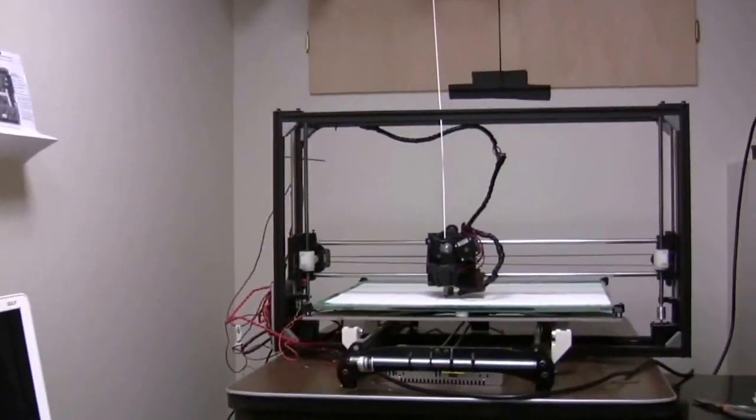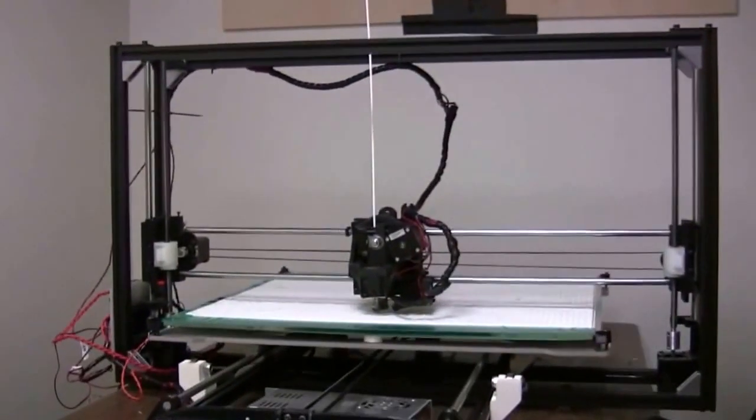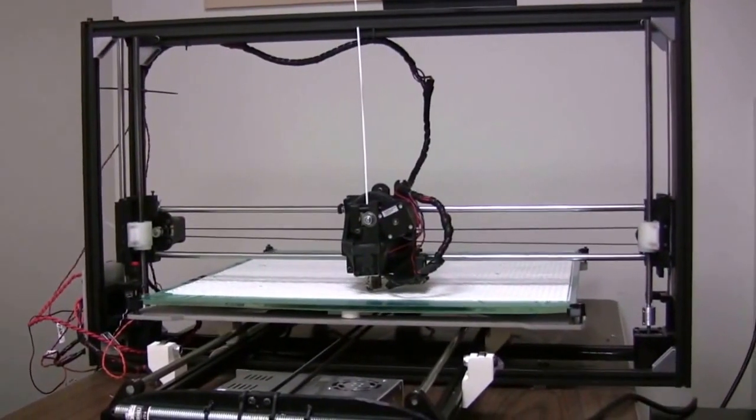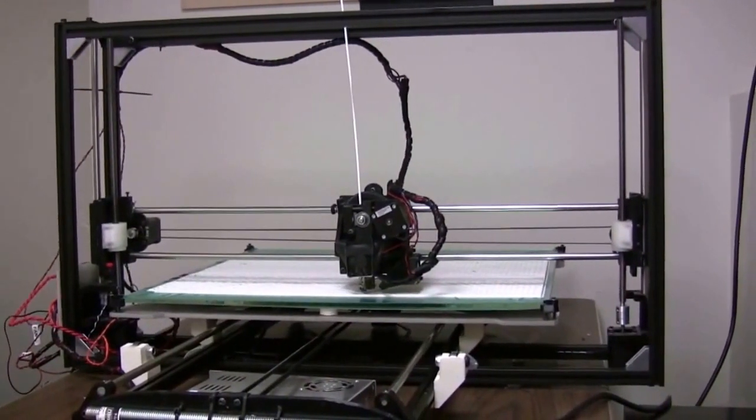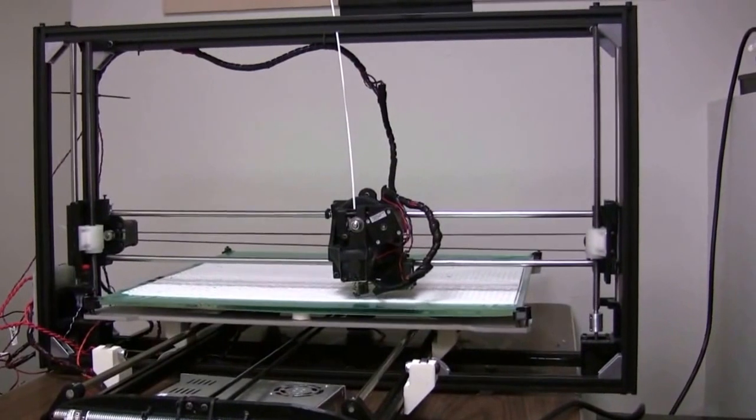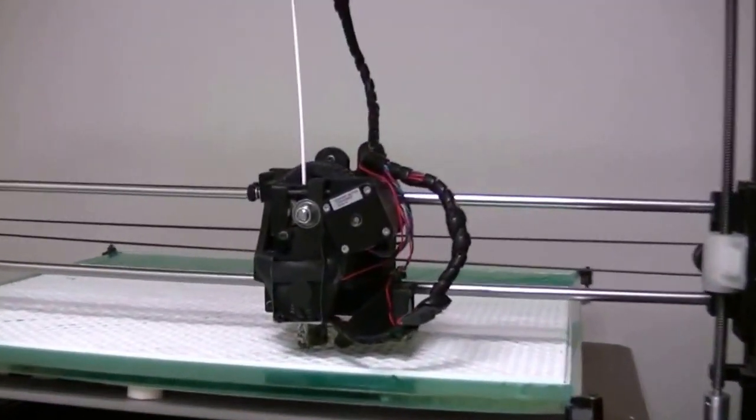This machine is called the Onodrim and is a 3D printer. It's currently printing a topography of our mountain campus at Pingree Park.